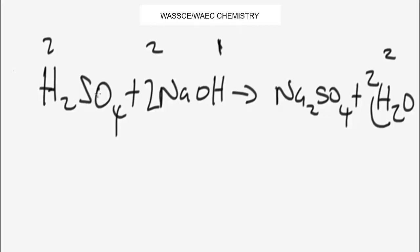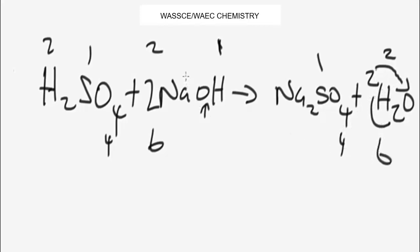For sulfur: we have one atom of sulfur on the left and one atom of sulfur on the right — sulfur is balanced. For oxygen: we have four from H₂SO₄ plus two from the two NaOH molecules giving six atoms of oxygen on the left. On the right, we have four from sodium sulfate plus two from the two water molecules, also giving six atoms of oxygen — oxygen is balanced.